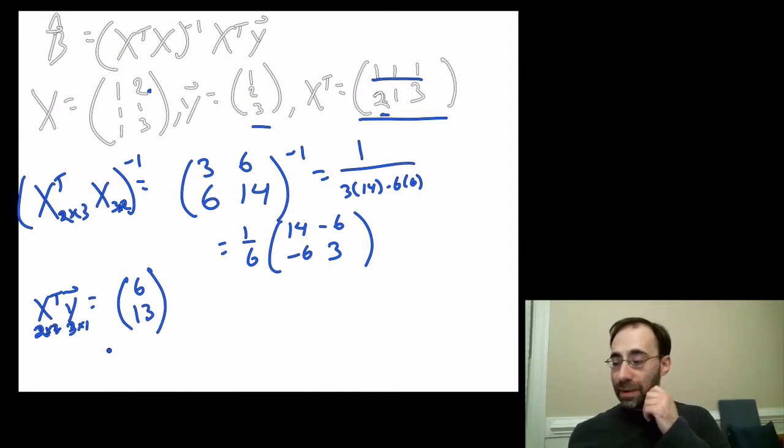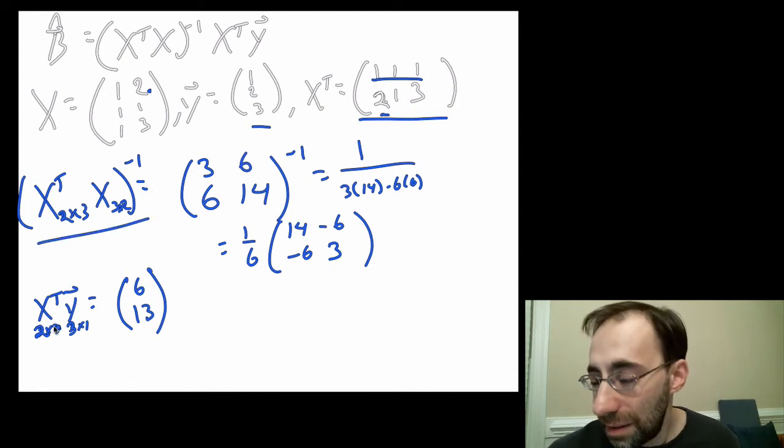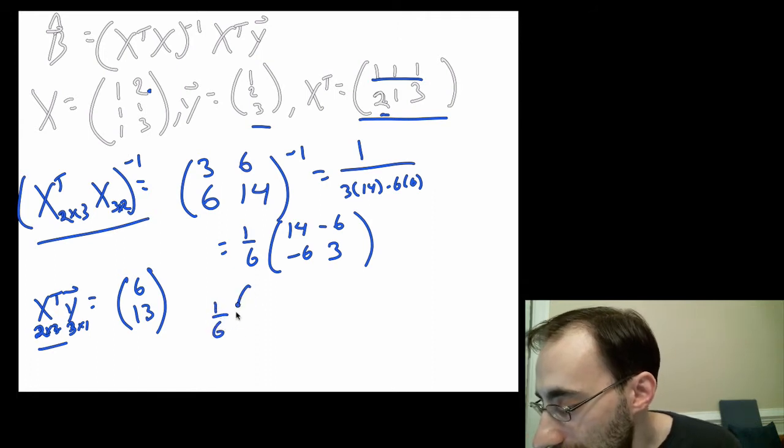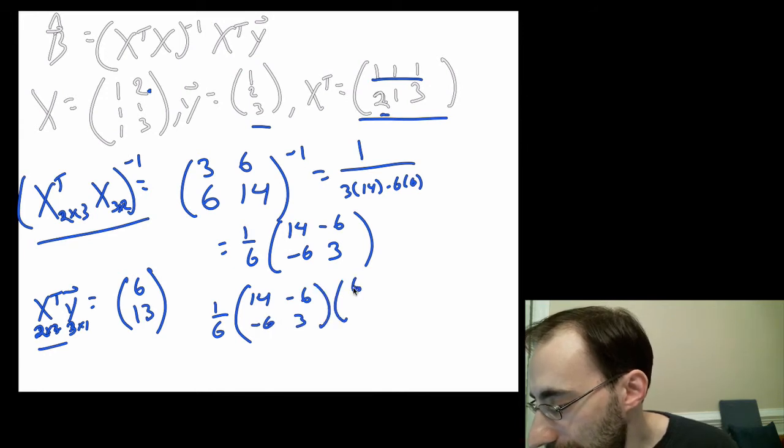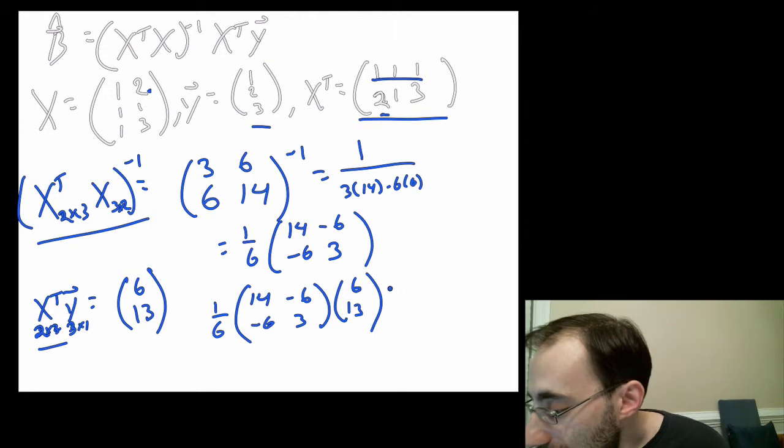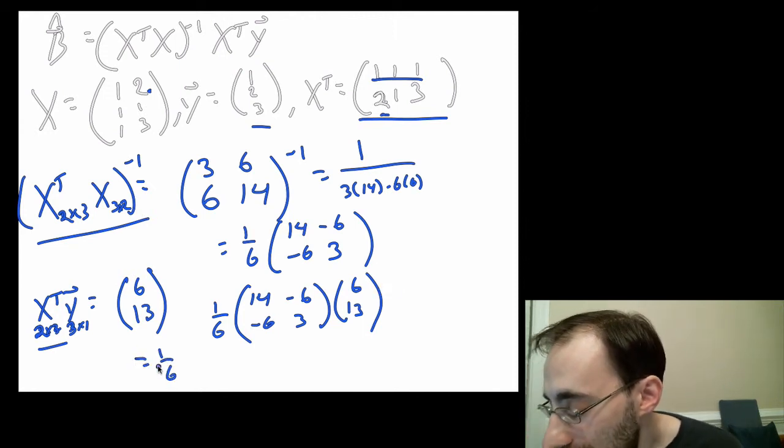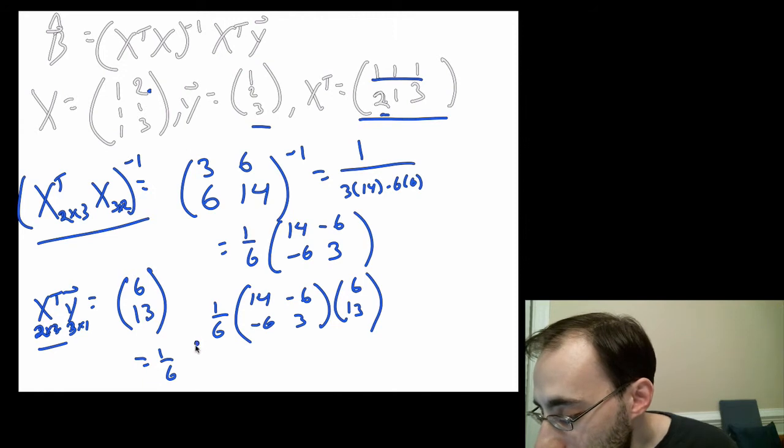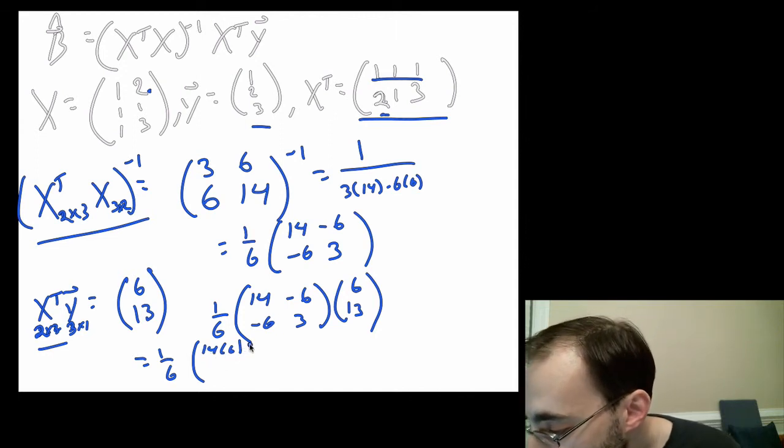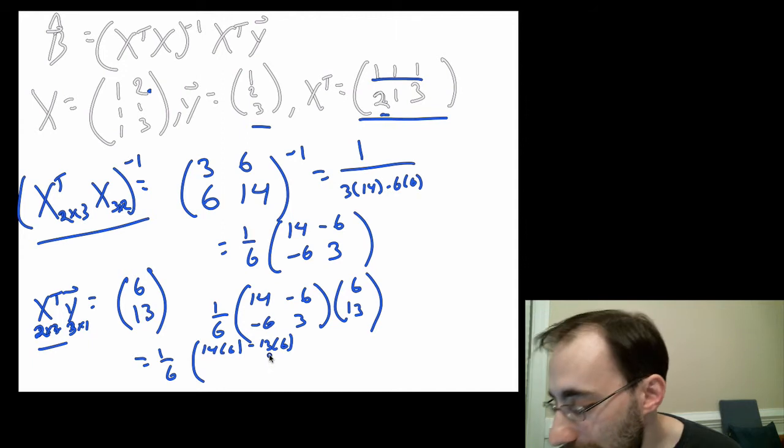We're almost done. I multiply this times this. So we get one sixth times 14, negative six, negative six, three times six, 13. How do you do this now? It's a two by two times a two by one. That gives you a two by one. So that's going to be equal to one sixth. It stays out front, it's a scalar. The first one is going to be 14 times six, I'm going to multiply this out in my hand, minus 13 times six. That's conveniently six.